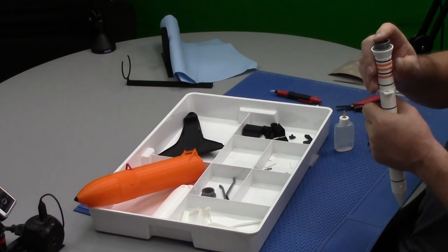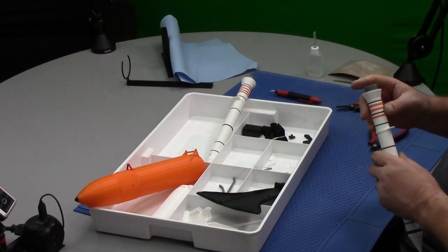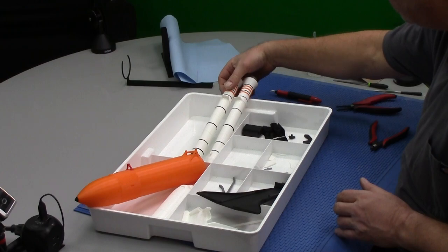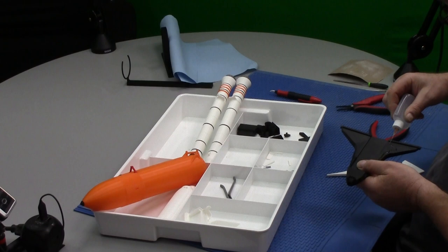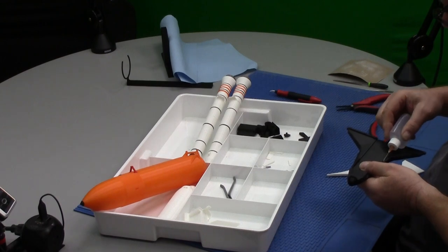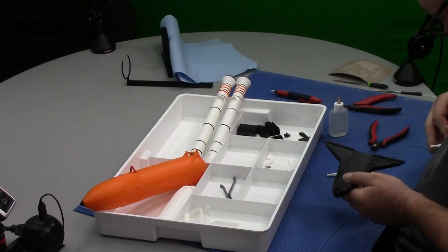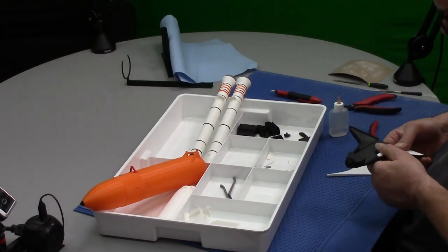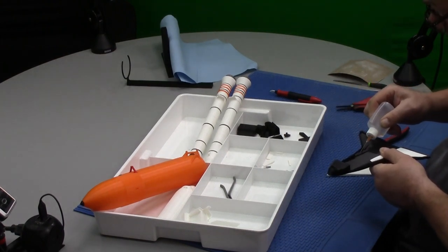40 seconds remaining in our launch window. Range is go. DLS, has the SRO hold been removed? Negative sir. SRO NTD, need to put your hold switch in proceed position. Copy that, proceed. DLS verified. 15 seconds remaining in our hold. We'll pick up momentarily. DLS, pick up the clock on your mark. Three, two, one, mark. T-minus 5 minutes and counting.